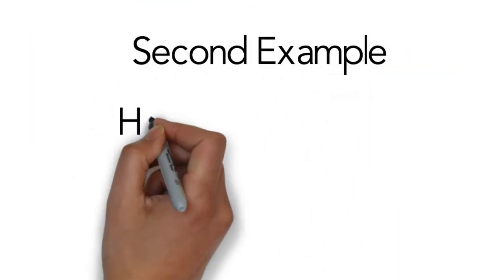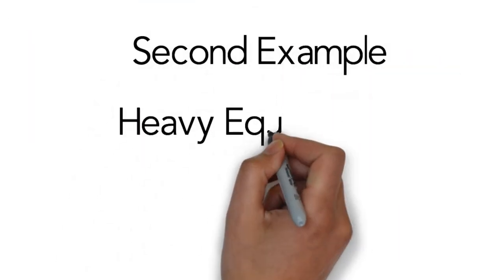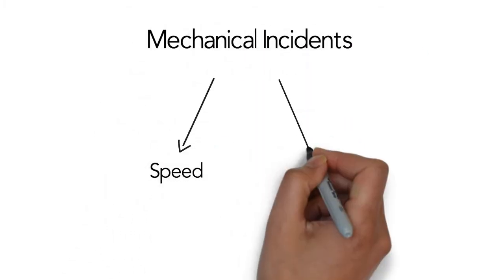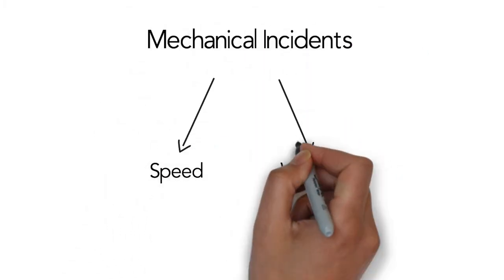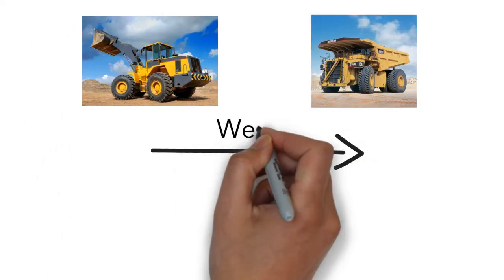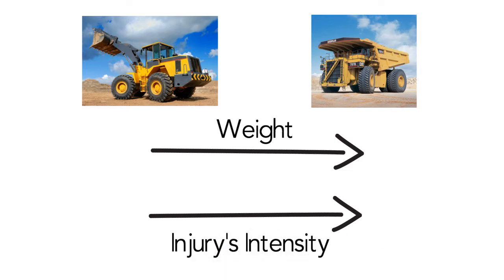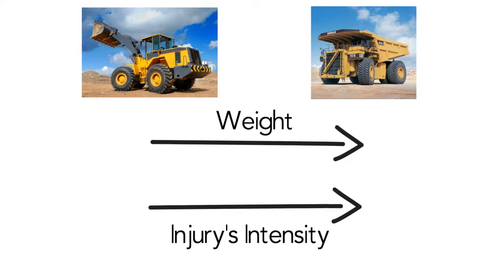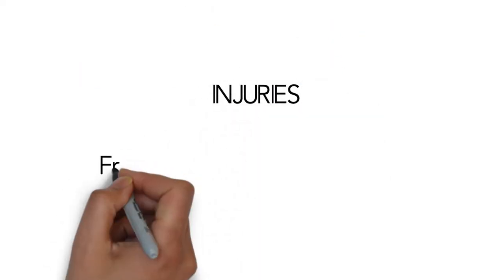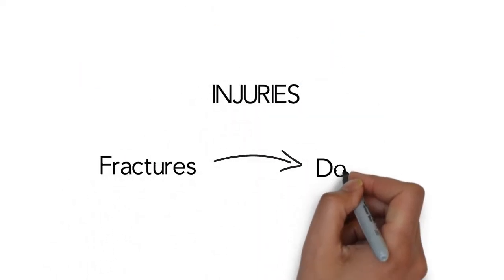Our second example is heavy equipment injuries. While mechanical incidents can be caused by speed, they can also be caused by weight. Most equipment used on site is very heavy and capable of causing serious injury. The heavier the object, the more intense an injury is likely to be. The close proximity of construction equipment with workers means equipment can easily impact a non-attentive worker. Injuries caused by heavy equipment can be minor such as fractures, or even as severe as death.